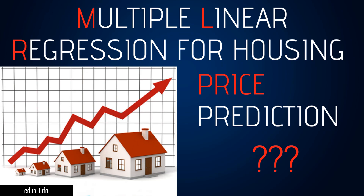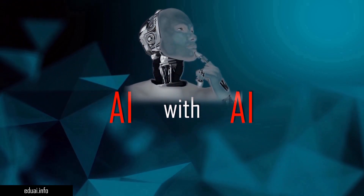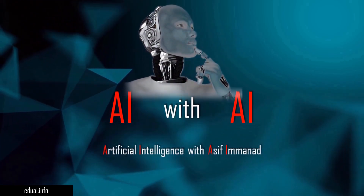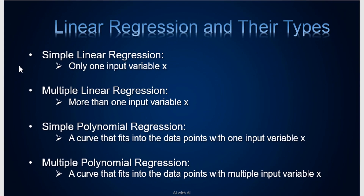Hey guys, welcome to AI with AI. In the last video we saw linear regression with one variable. Now let's proceed and understand linear regression and its other types. There are four types of linear regression algorithm. The first is simple linear regression, which we have already seen in the previous video. If you have not seen it, please go and watch that video — I'll keep the link in the description below.